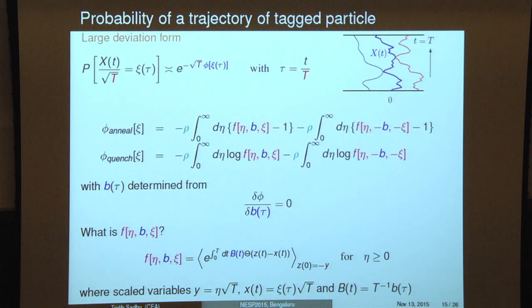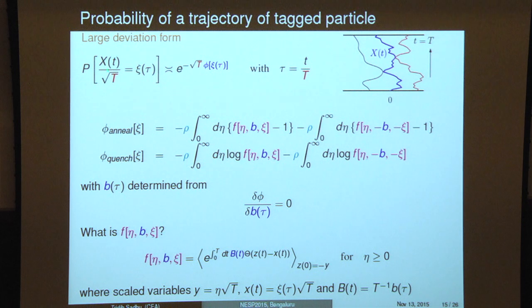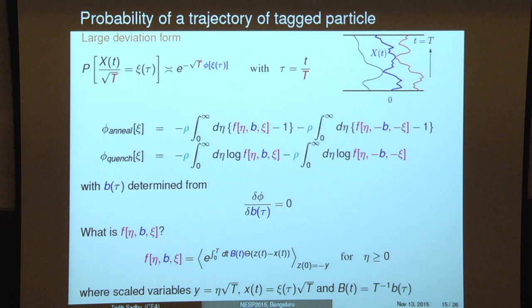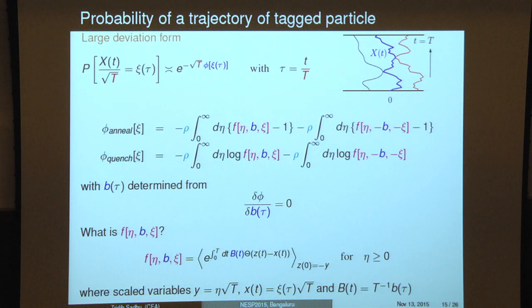The next generalization is to the characterization of the entire trajectory, observed in a time window from zero to capital T. That probability can be written in a large deviation form where phi is now a large deviation functional — a functional of the entire trajectory. For Brownian motion, you know this is like a free particle action. I want to find out what this quantity is for the tagged particle. Even here the result, when you generalize the steps, is in a very similar form where the only quantity that changes, shown in magenta, is now a functional of these trajectories. Again it is in parametric form, where one has to compute B(tau) from another relation.